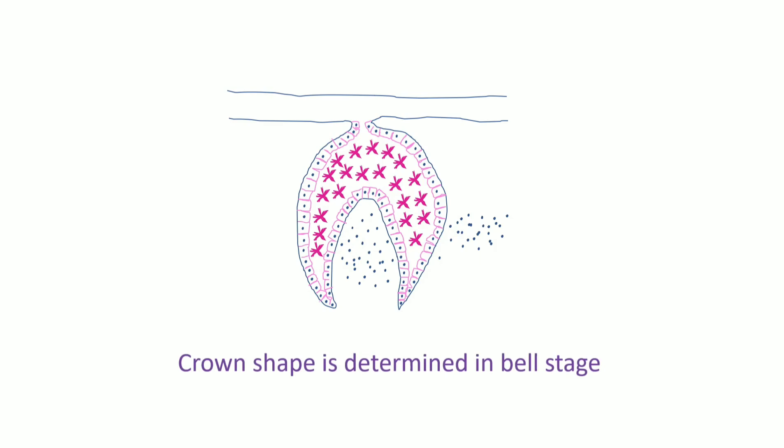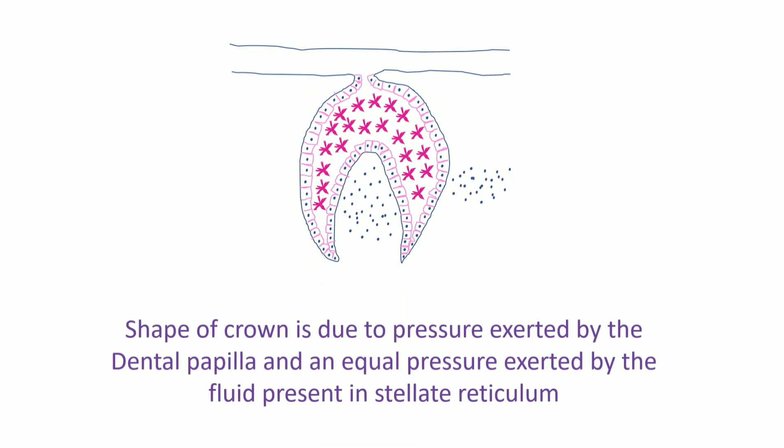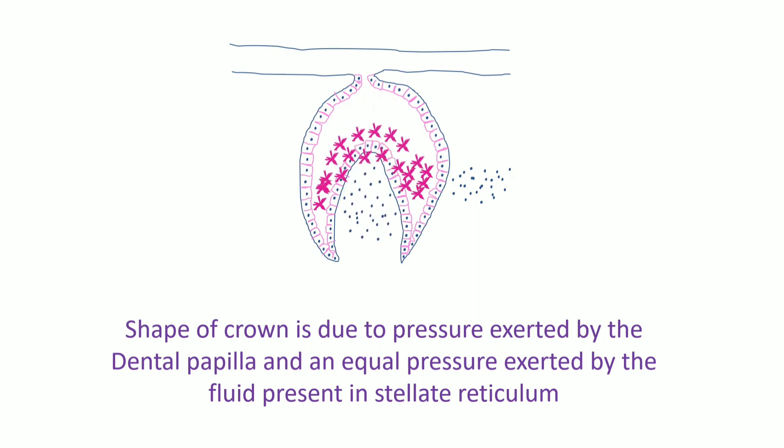Bell stage. Due to the invagination of epithelium deepening, the enamel organ resembles a bell shape. Crown shape is determined in bell stage. This shape of the crown is due to the pressure exerted by the dental papilla and equal pressure exerted by the fluid present in the stellate reticulum.